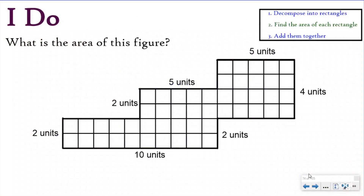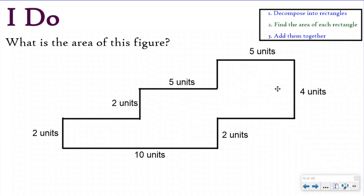Here we have the same question — the same exact problem we just solved — with the dimensions labeled and split apart so we're able to find the area. Now the difference between last lesson and today is we no longer have the unit squares covering it. We're going to have irregular shapes and we'll have to use the given dimensions to find the area.